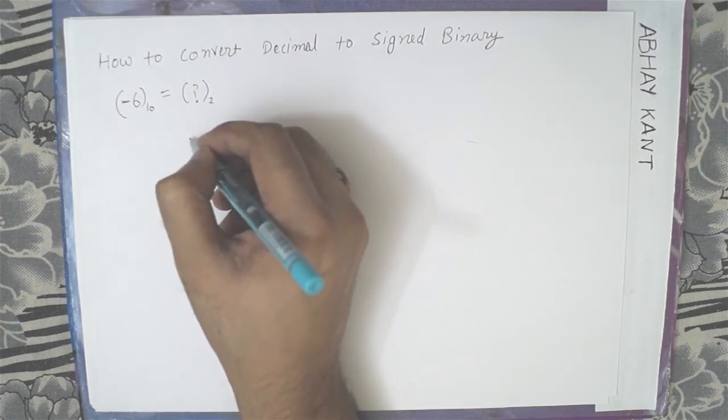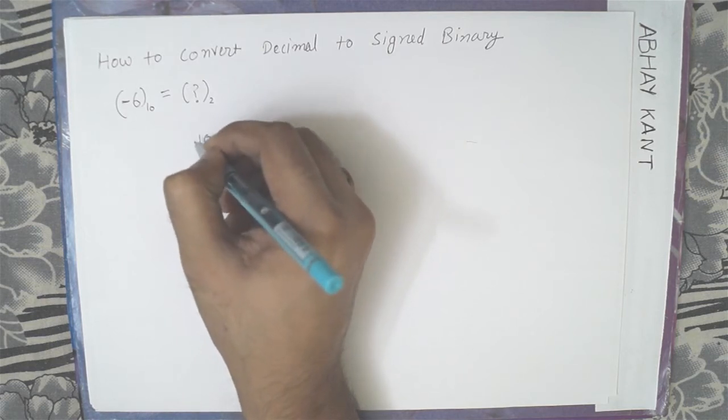So how do we represent 6? So 6 is 0, 1, 1, 0.